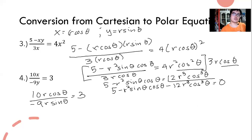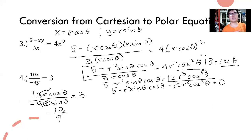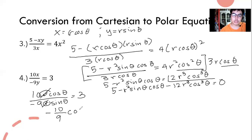It was done through substitution. Since there's a common factor, we cancel it. What remains is negative 10 over 9. Now, cosine theta over sine theta — remember that tangent equals sine theta over cosine theta. Since this is the reciprocal, we apply the reciprocal identity, giving us cotangent theta. That is our answer.